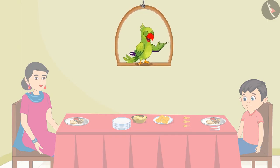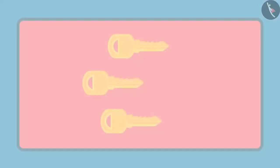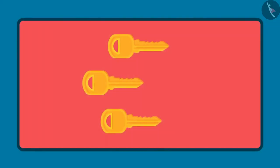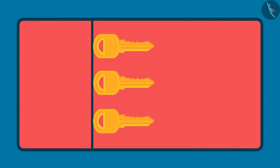So kids, now you also won't make a mistake in comparing the length of two or more objects like Chotu, right? Friends, always remember that before comparing the length of objects, first we should keep the objects together so that one end of all the objects is together.